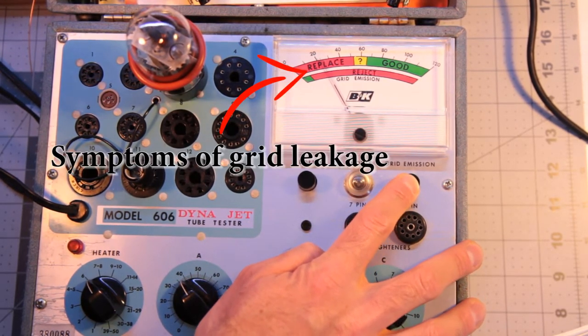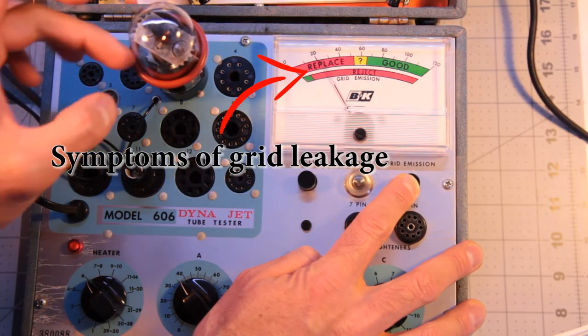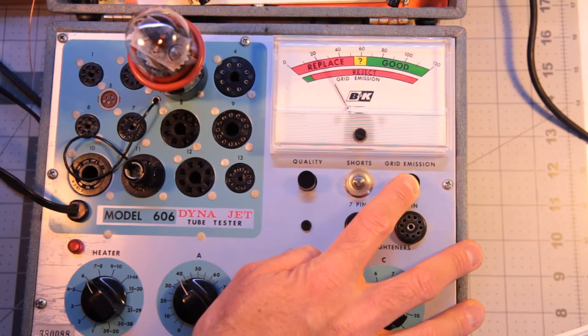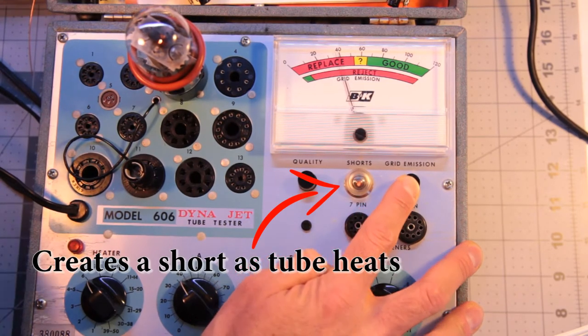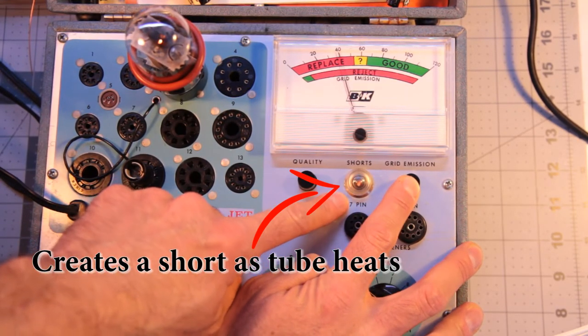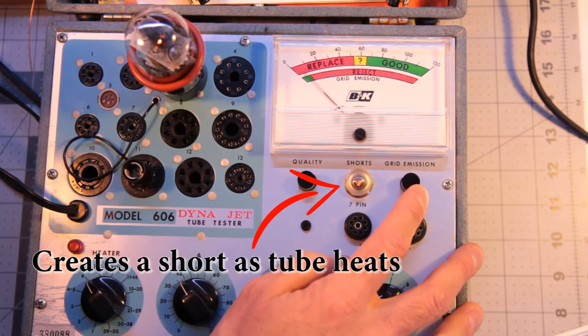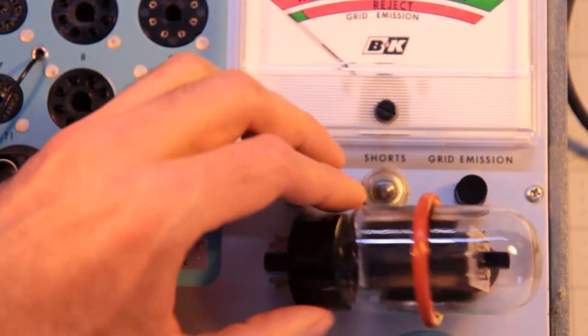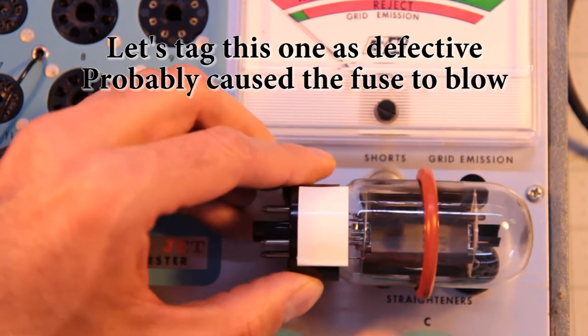Now for this last one, right from the get-go, there are some signs of grid emission and shortly after, as the tube is heating, the shorts bulb is lighting up. At this point, we can actually assume this tube created a short and blew the fuse, which could mean it was an easy fix. We will mark the tube as dead.